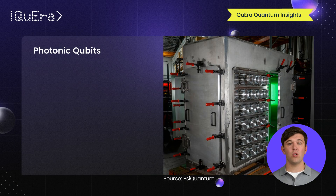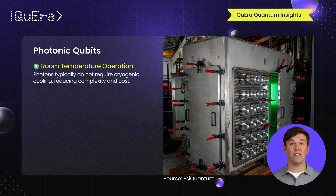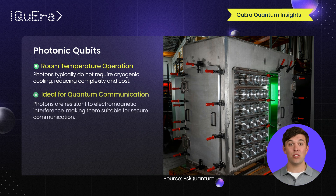Photonics-based quantum computing uses photons, or light particles, to encode and manipulate qubits. The key advantage of this modality is that photons can operate at room temperature, eliminating the need for costly cryogenic cooling. Photonics is also ideal for quantum communication, thanks to its resistance to electromagnetic interference.